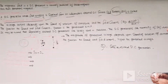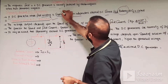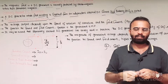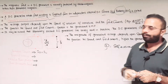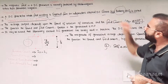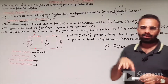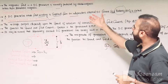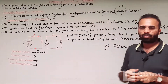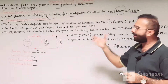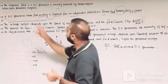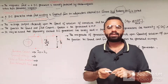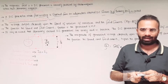The magnetic field in a DC generator is normally produced by electromagnets rather than permanent magnets. In the field system of the DC generator, we normally use electromagnets rather than permanent magnets because permanent magnets have limited magnetic properties.